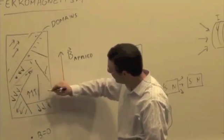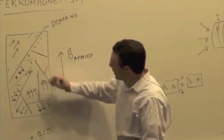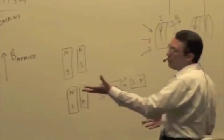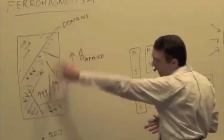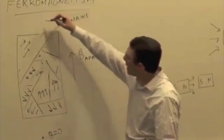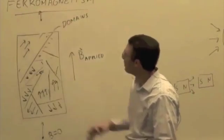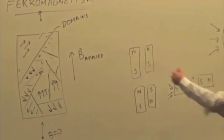So maybe that one grows too. And so now, I didn't quite draw this very well, but you end up with most of the domains are kind of aligned in the same direction. And now it can actually produce a net magnetic field at a particular location.